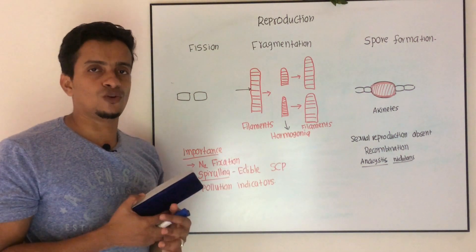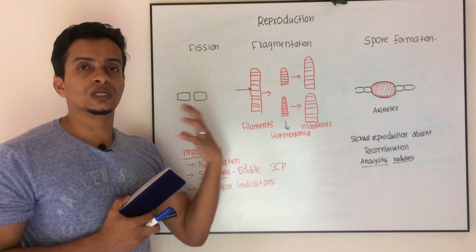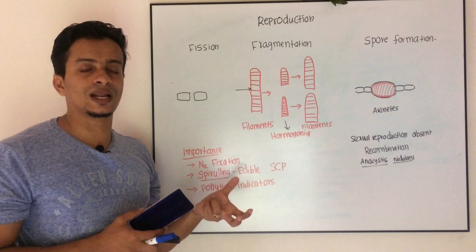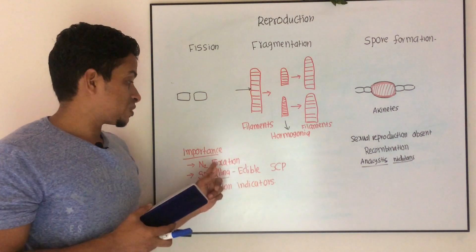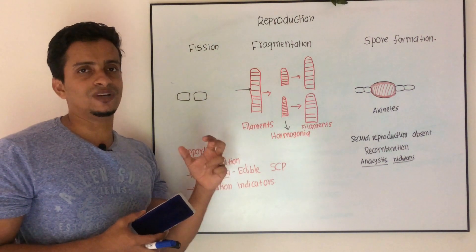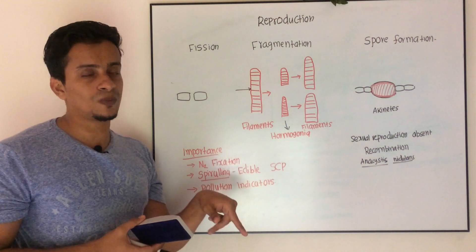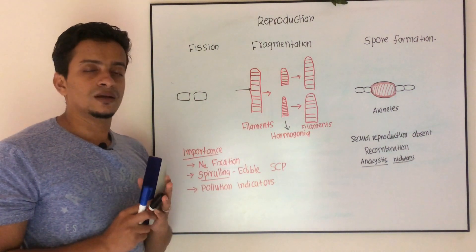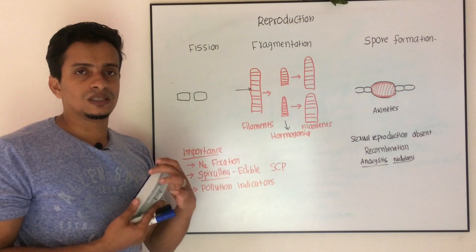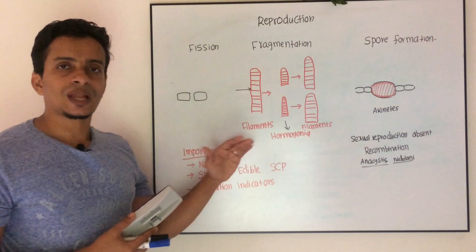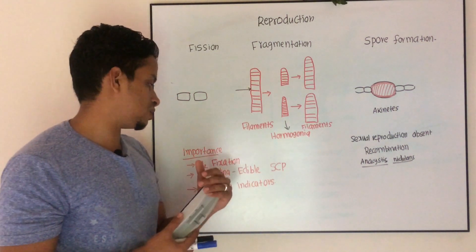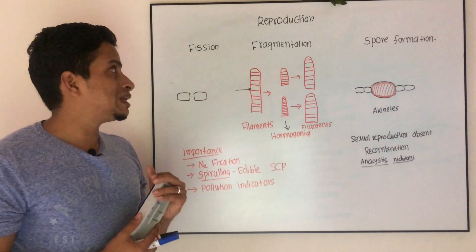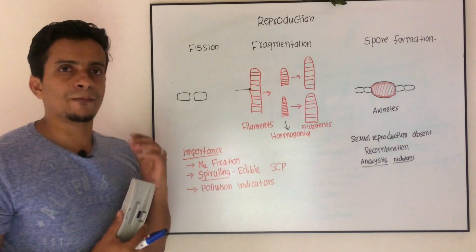The importance of Cyanophysiae: First, nitrogen fixation — heterocysts are specialized cells meant for nitrogen fixation, which is an essential requirement for plants, helping in biological nitrogen fixation. Second, some forms are edible — Spirulina is a blue-green alga that is edible and serves as a single-cell protein. Third, they act as pollution indicators.